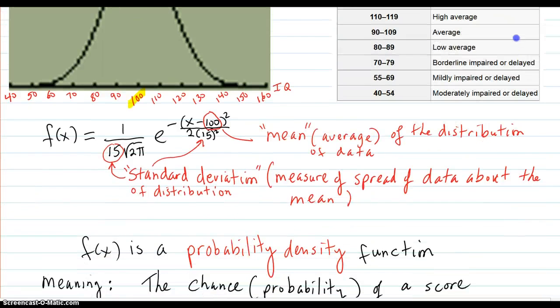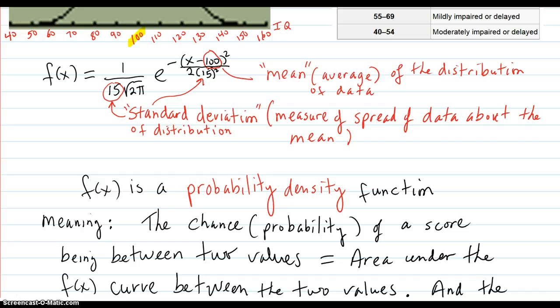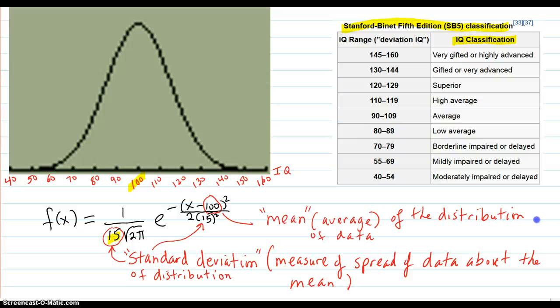Okay, so looking back at this formula again, this 15 right here is actually the standard deviation of the distribution. That's a measure of the spread of the data about the mean.